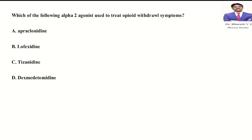Moving on to the next question: which of the following alpha-2 agonists is used to treat opioid withdrawal symptoms? Options are apraclonidine, lofexidine, tizanidine, and dexmedetomidine. All are alpha-2 agonists, but which is used to treat opioid withdrawal symptoms?